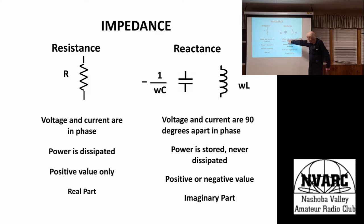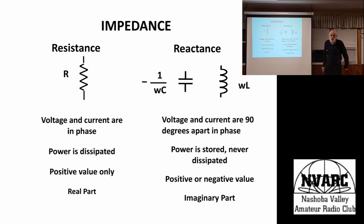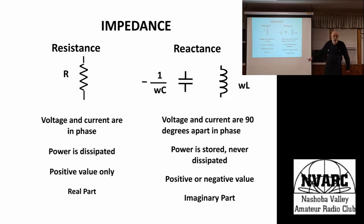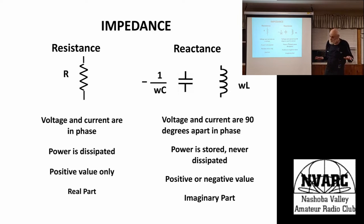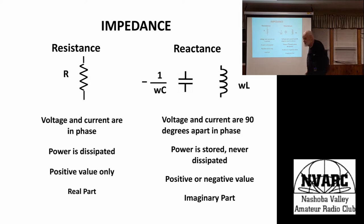For both inductors and capacitors, the voltage and current are 90 degrees apart, so power is stored — no power is dissipated at all. Tonight all our capacitors and inductors are going to be perfect.